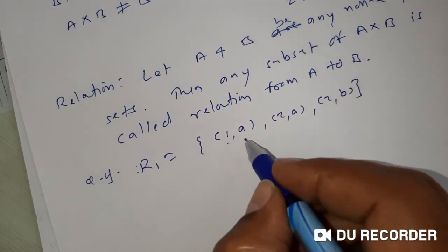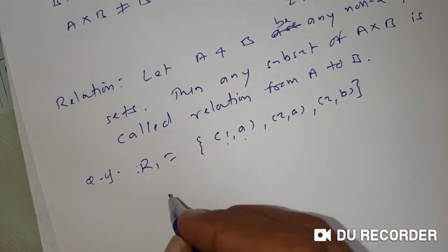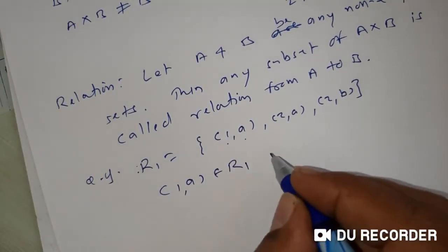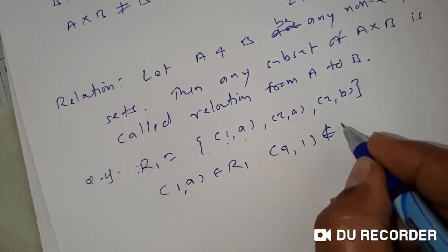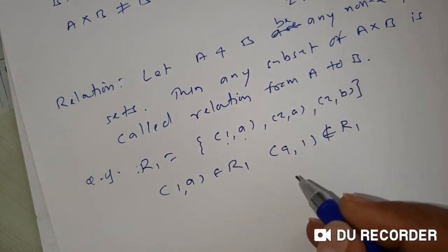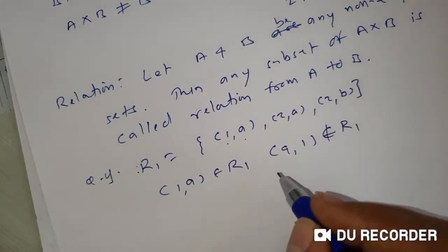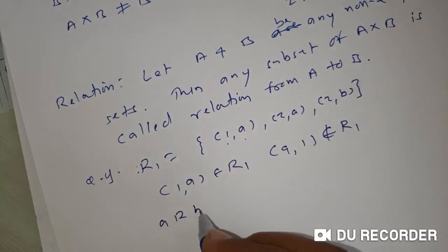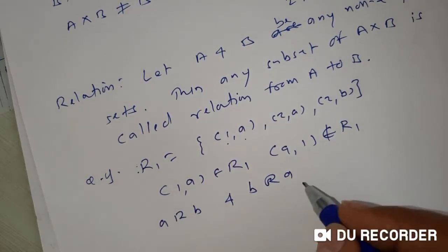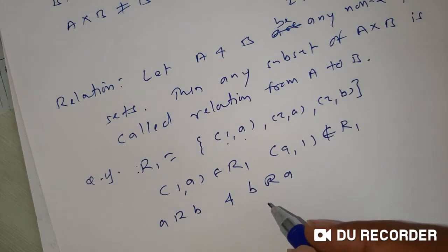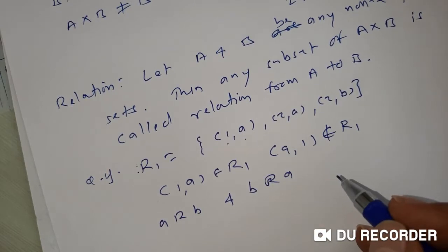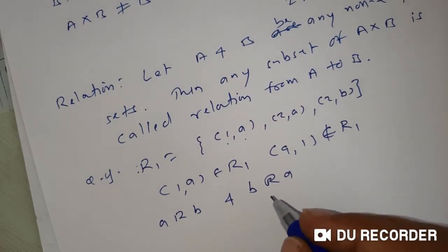Under this relation, 1 is related to a because (1,a) belongs to R1. But (a,1) is not present in R1, so a is not related to 1. Note that 'a is related to b' and 'b is related to a' are two different things. If a is related to b, we cannot automatically say b is related to a — only if both (a,b) and (b,a) are present in the relation can we say both hold.